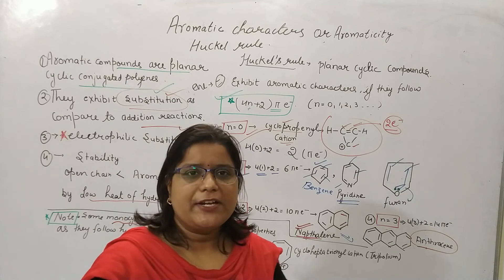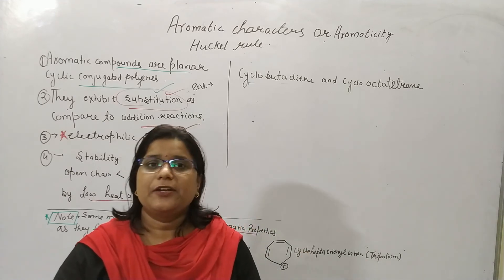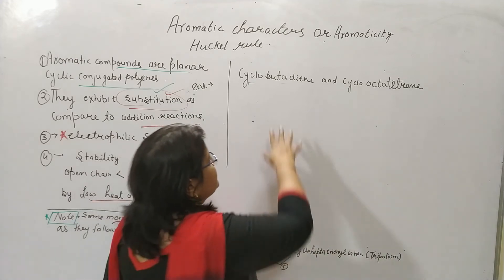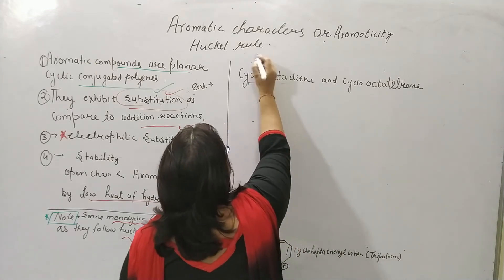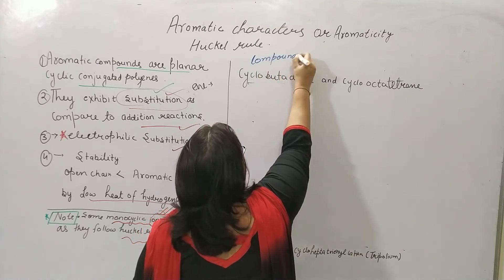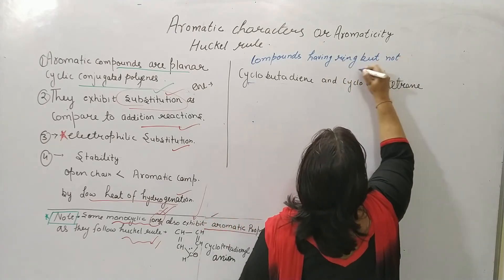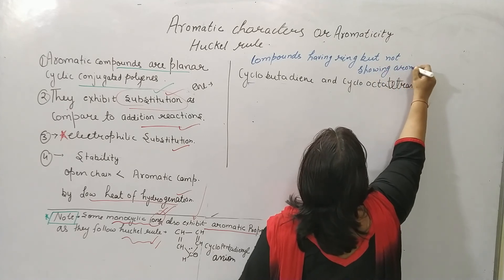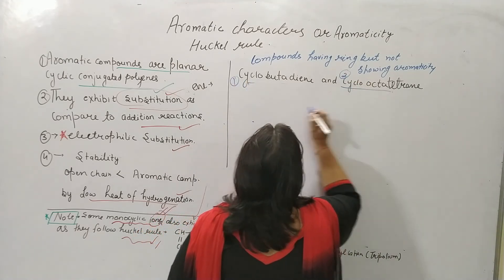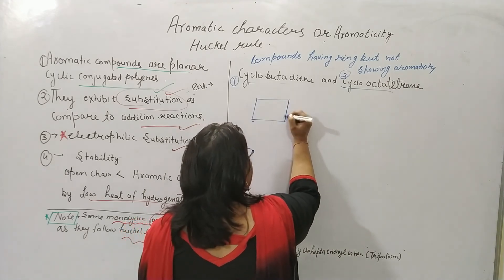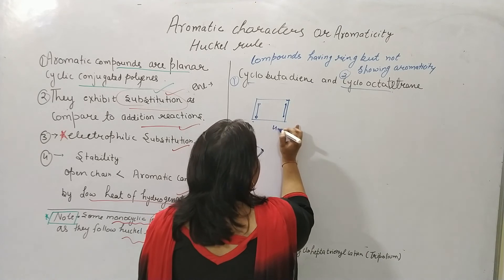Now let's look at two examples of ring compounds that do not show aromatic character despite having pi electrons. The first is cyclobutadiene and the second is cyclotetraene. In cyclobutadiene, the number of pi electrons is 4. The formula 4n + 2 requires pi electron counts of 2, 6, 10, 14, and so on.